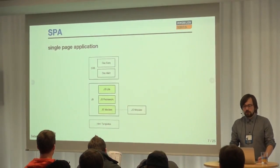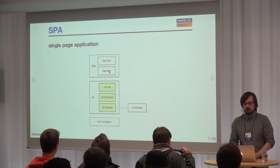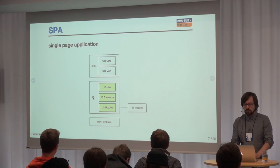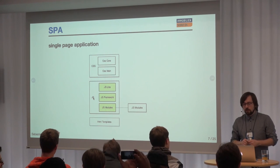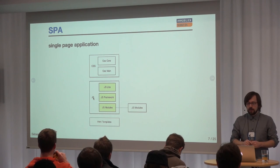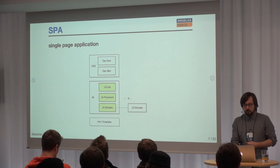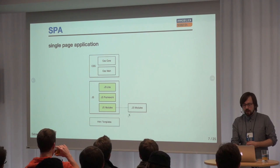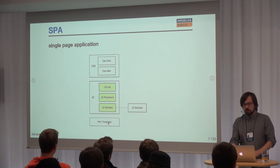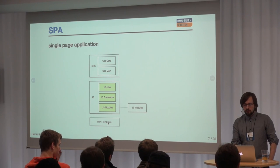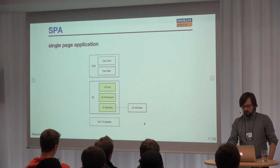SPAs mostly contain a CSS file which bundles together other files and ships them to the browser. The same happens in the JavaScript section — you mostly get one JavaScript file where everything is bundled together. This includes JavaScript libraries, frameworks, and the modules — the code you write. There are also lazily loaded additional modules built on top of your frameworks and libraries. Your browser also has HTML templates, mostly loaded later from the server.